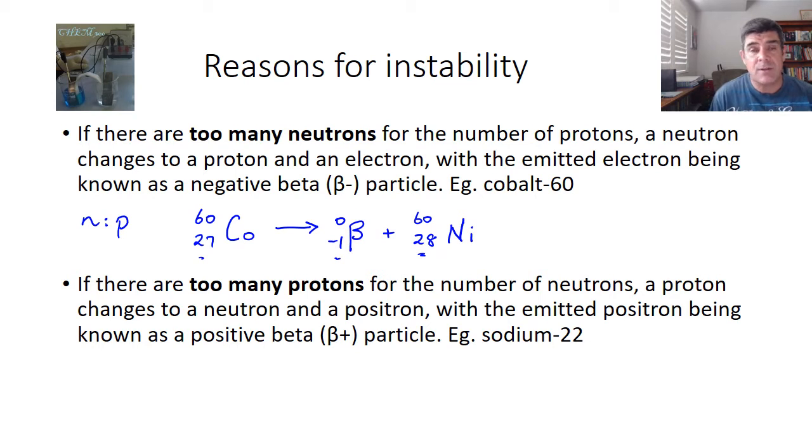Similar sort of thing happens when the neutron to proton ratio is not stable, but because there are too many protons. So when there are too many protons, we get an antiparticle of the electron, which is called the positron, or positive electron, which is a contraction.